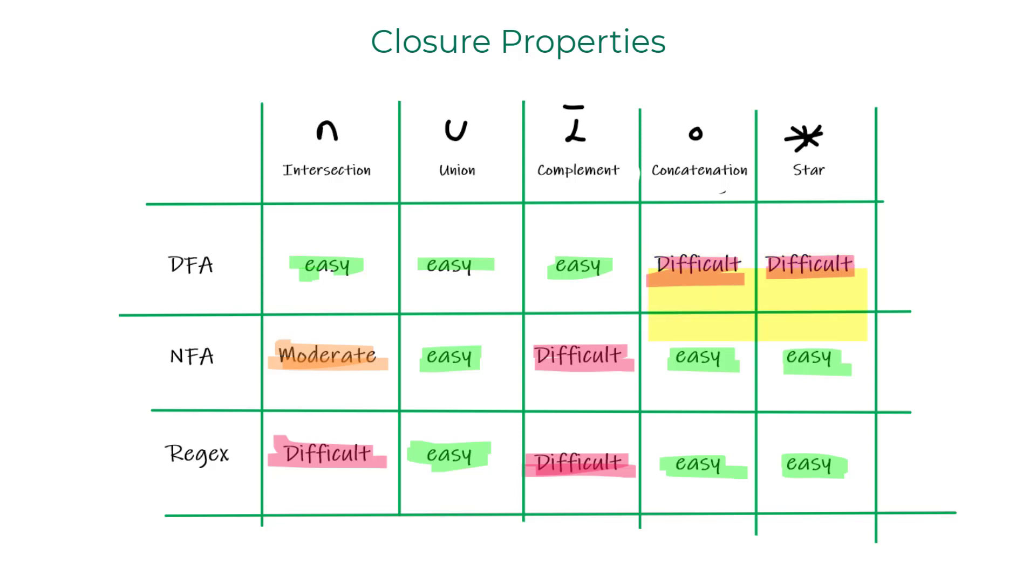That is where NFA comes to our rescue. Both concatenation and star operations become pretty easy to achieve using the epsilon transitions. It makes union of two NFA languages easy as well. The intersection language of two NFAs takes some extra work for accommodating epsilon transitions, but it is still doable.